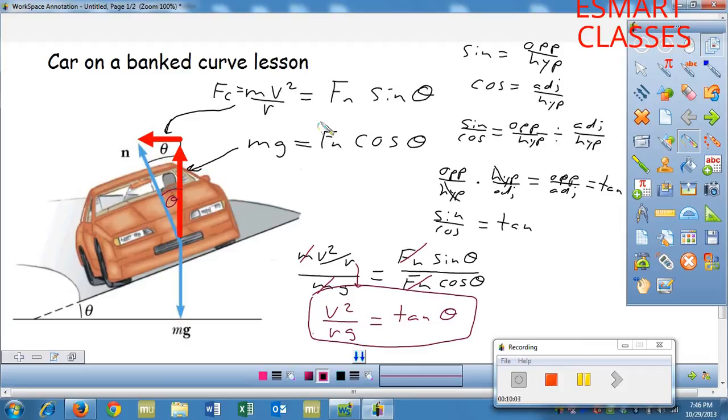And then there's the vertical force, which is what balances out mg. So it's equal to mg is the normal force times the cosine of theta, because it's the adjacent.